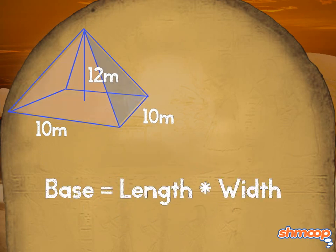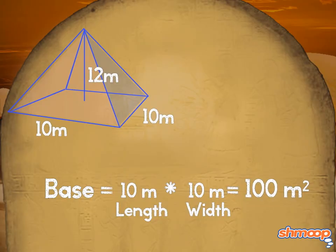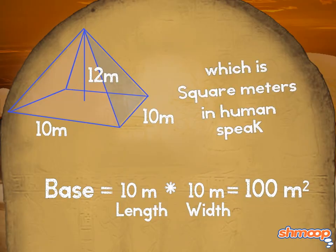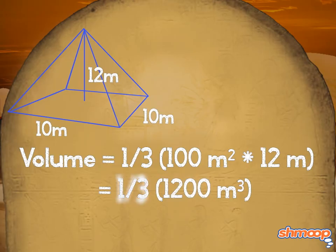Because we have a square base, we know that its area is length times width, which is just 100 meters squared. We plug that into our formula and solve for the volume. One-third times 100 times the height of 12. 100 times 12 equals 1200 divided by 3, which equals 400. That's 400 cubic meters.